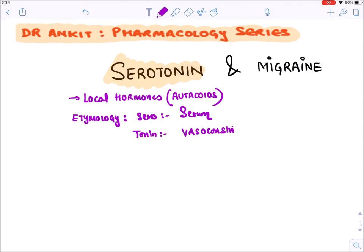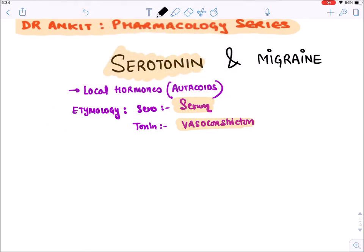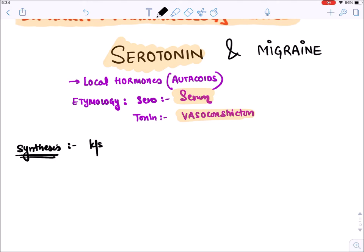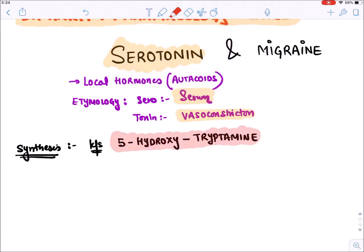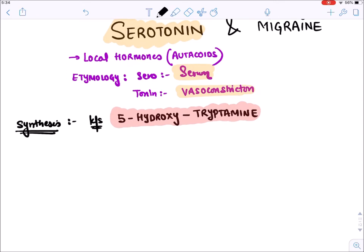So from there the word serotonin came - it is present in our serum and produces vasoconstriction. Now let's see how serotonin is synthesized. Another name for serotonin is 5-hydroxytryptamine (5-HT). It is an amine synthesized from an amino acid known as tryptophan.